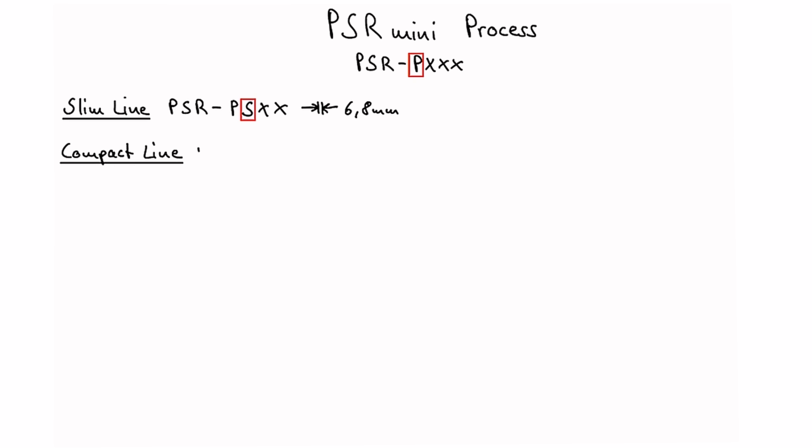The compact line is PSR minus PC, and this stands for 12.5 millimeters up to 22.5 millimeters. The following numbers describe the function of the safety module.